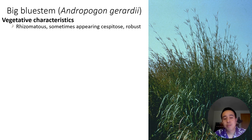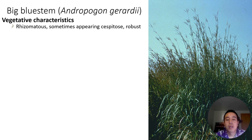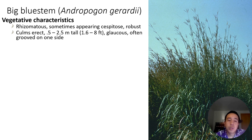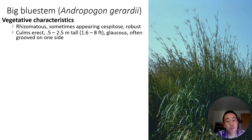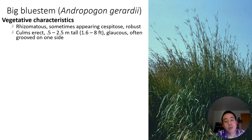First off, the vegetative characteristics. Oftentimes big bluestem can be rhizomatous, and typically will appear cespitose — which means bunchy, like a bunch grass. It's typically a robust or big plant. The culms typically grow erect or straight and tall, ranging from 0.5 to 2.5 meters — that's about 1.6 to 8 feet tall. Oftentimes they're glaucous and can be grooved on one side.